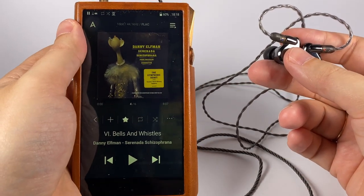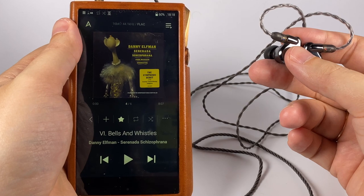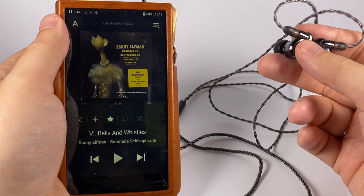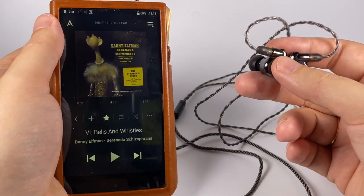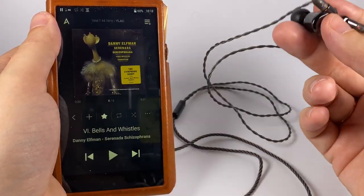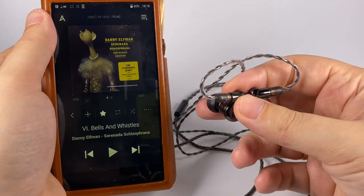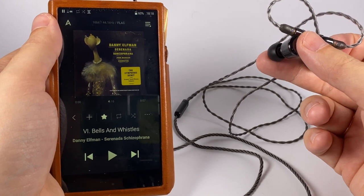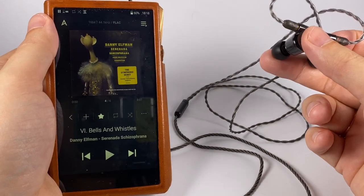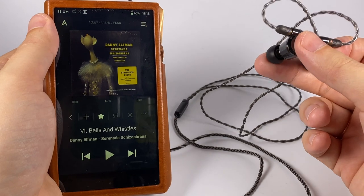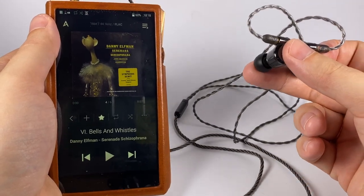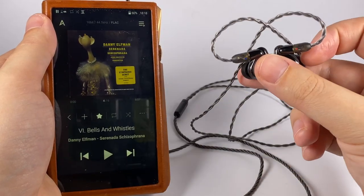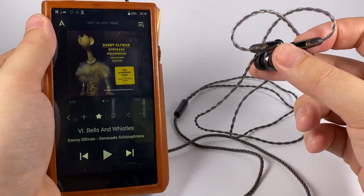And first example of the mid frequencies - it's Danny Elfman, Serenada Schizofrana. Really like this symphonic poem and its track Bells and Whistles. And I like this track name as a programmer - I really like this concept of bells and whistles. And of course this track has a lot of bells and whistles - it would be surprising if it would be otherwise.